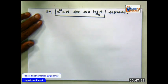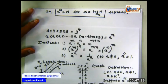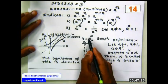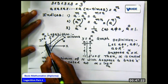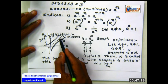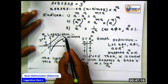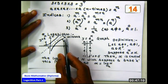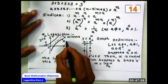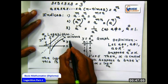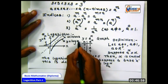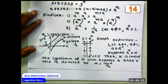So we are ready with the definition: A raised to X equals N implies — and vice versa — X equals the logarithm of N with respect to base A. This equivalence is treated as the definition.